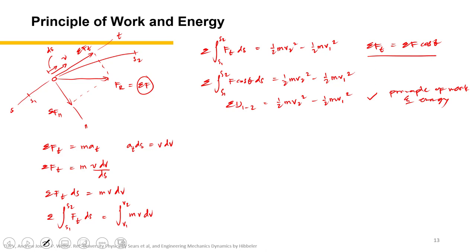The term on the left side is the sum of all the work done by all the forces that are acting on the particle as it moves from point S1 to point S2, while the two terms on the right side are the particle's final and initial kinetic energy. Sometimes they are labeled as T sub 2 and T sub 1.